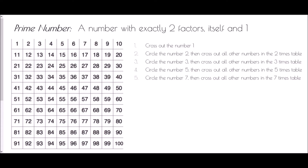A prime number is a number with exactly two factors: itself and one. You should have already seen what a factor is, so we're going to go straight into this. I'm going to show you a way of generating the prime numbers between one and a hundred, following the instructions on the right-hand side.